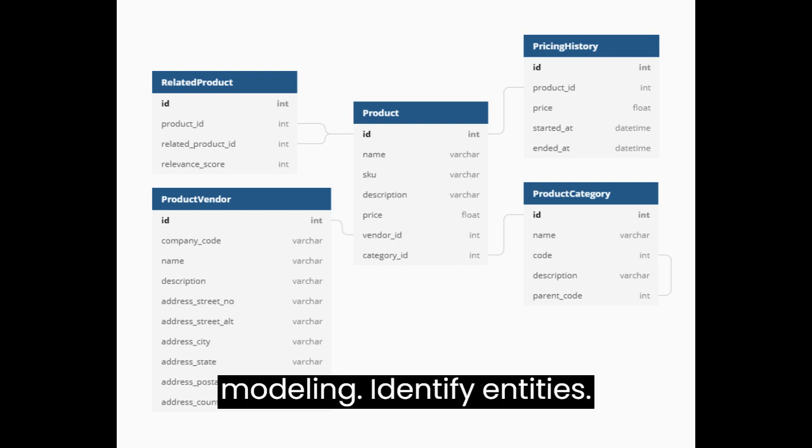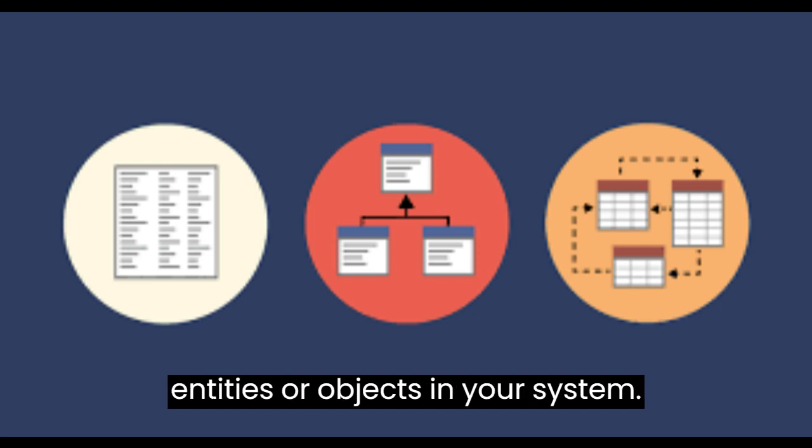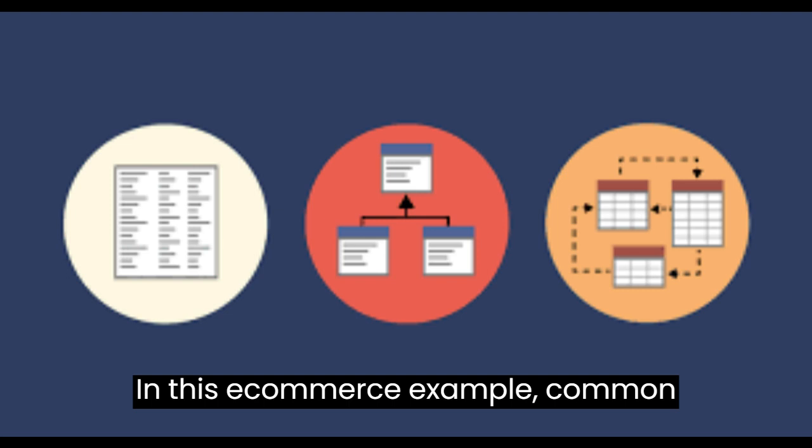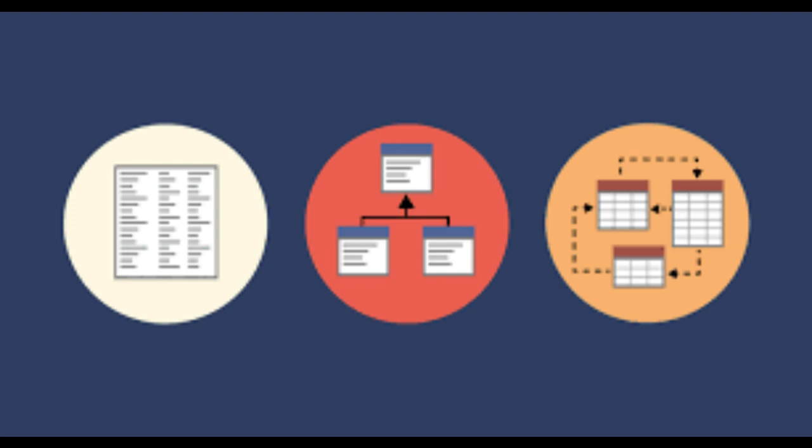Steps in data modeling. Identify entities. The first step is to identify the main entities or objects in your system. In this e-commerce example, common entities include product, customer, order, and review.